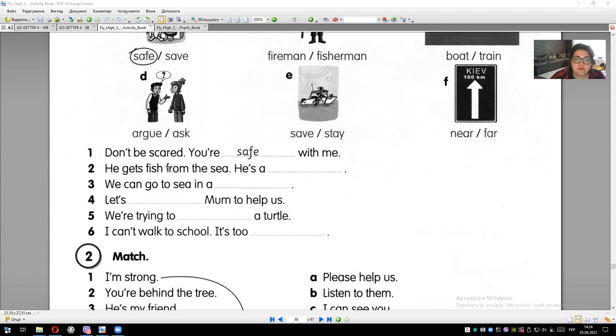He gets fish from the sea. He gets fish from the sea. He is, he's a fisherman. We can go to the sea in - we can go to the sea, sail on the sea - in a boat, in a boat.